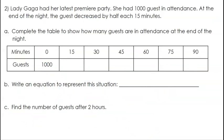One more example together. Lady Gaga had her latest premiere party. She had 1,000 guests in attendance at the end of the night. The guests decreased by half each 15 minutes. Complete the table to show how many guests are in attendance at the end of the night.